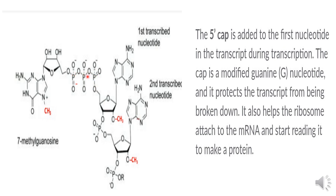After the phosphate modifications, the 7-methylguanosine is added at the 5' end. A methyl group is added at the seventh carbon of guanosine. If a methyl group is also added to the first nucleotide, this is Cap 0. If a methyl group is added to the second nucleotide as well, this is Cap 1. If the third nucleotide also receives a methyl group, this is Cap 2. This capping occurs at the 5' end of the mRNA.